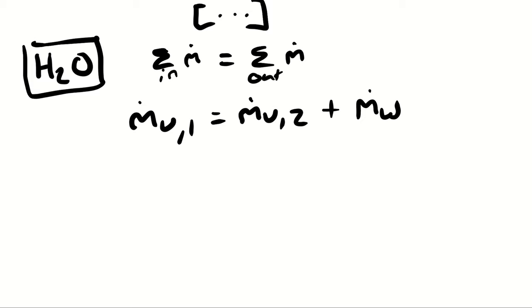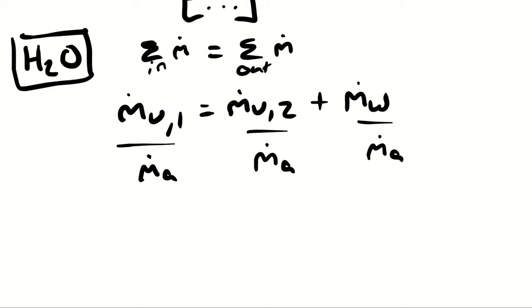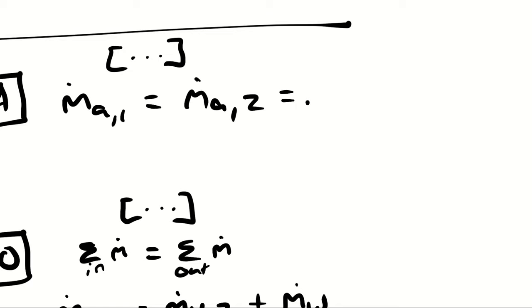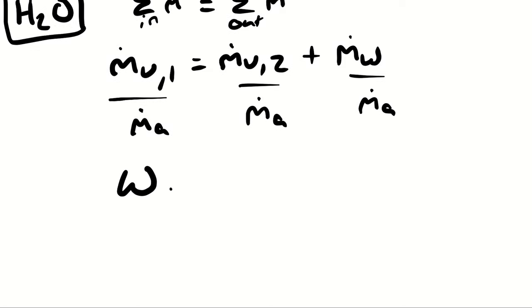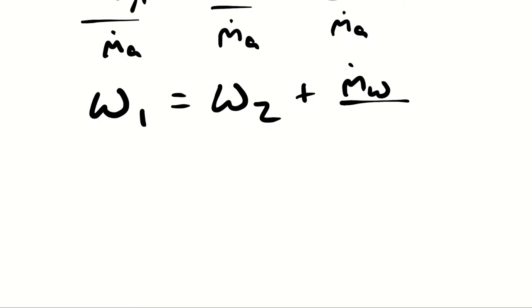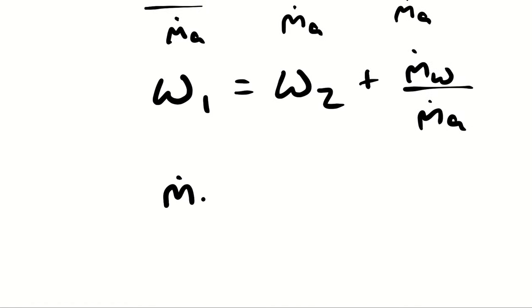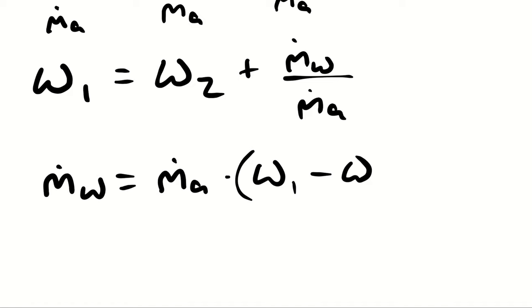If you've been following the previous examples, you probably recognize that I want to divide through by ṁ_a. I'm calling ṁ_a1 and ṁ_a2 the same quantity for convenience. Dividing by ṁ_a allows me to write ṁ_v1/ṁ_a as the humidity ratio at state 1, and similarly at state 2. This gives me ṁ_w equals ṁ_a times (ω₁ minus ω₂).